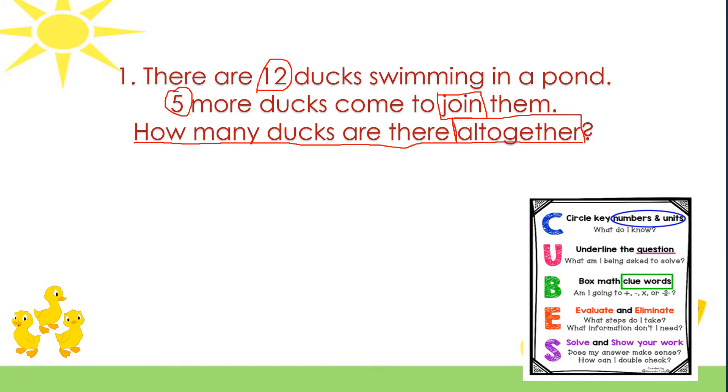And so now I'm going to do my last step, S, and I'm going to solve 12 plus 5. I'm going to start on my ones column. 2 plus 5 gives me 7, and 1 plus nothing gives me 1. And so the sum of 12 plus 5 is 17 ducks.